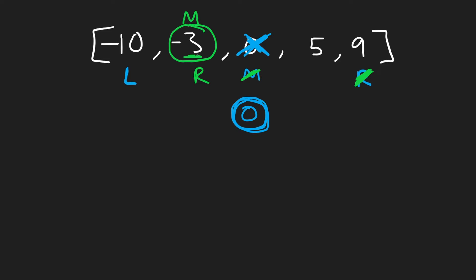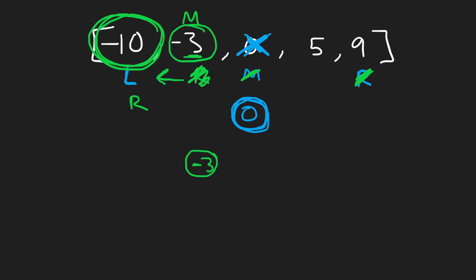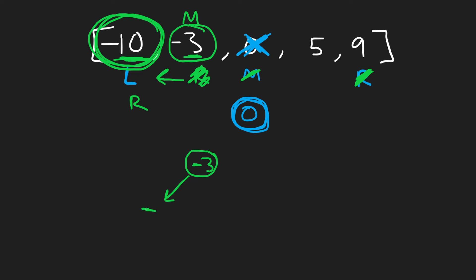So now negative three is going to be the root of our left subtree. We're going to update our pointers now — we know we don't have any more elements to the right for this subtree. So we take our right pointer and shift it to the left and create a left subtree from this single element. Since this is basically the base case — left and right are together — mid is also going to be in this position. We know the left child of negative three is going to be negative 10. In reality, our algorithm is going to have a different base case. Now we continue for negative 10.